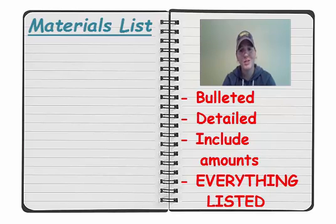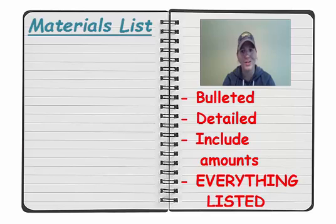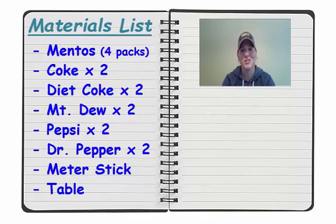A good materials list is going to be full and detailed, and everything you're going to use is listed, including amounts. If you need 100 milliliters of water, say that. Someone has to repeat this experiment with what you've listed here for supplies.